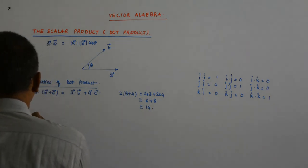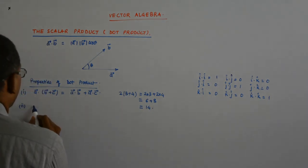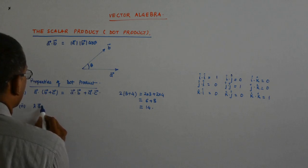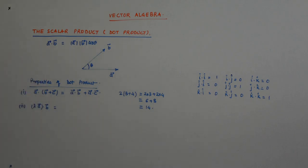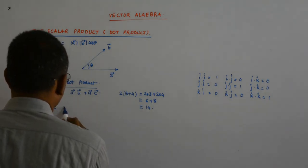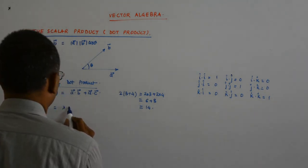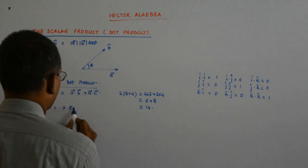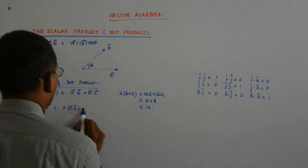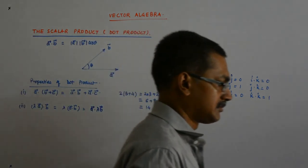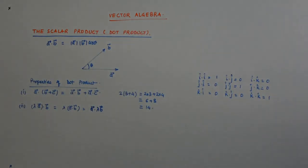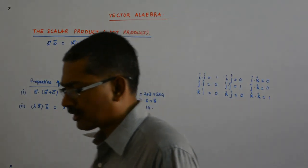Now the second property is, if I have lambda times a dotted with b, then that is equal to lambda a dot b, or that is also equal to a dot lambda b.